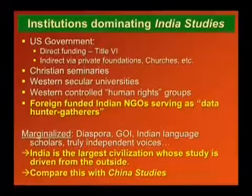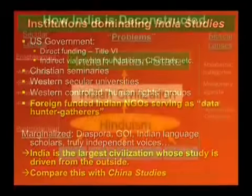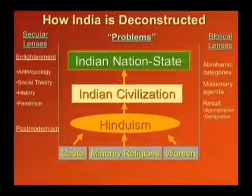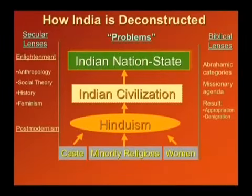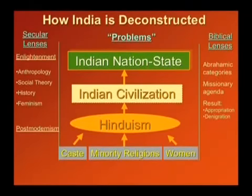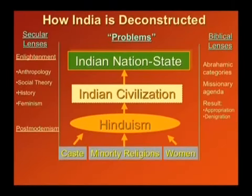I will give you a very simplified view of how India is deconstructed. There are secular lenses which include both enlightenment and post-enlightenment, post-modernism. The enlightenment lenses include things like anthropology, social theory, history, and western feminism, while post-modernism has a whole lot of different kinds of theoretical lenses.